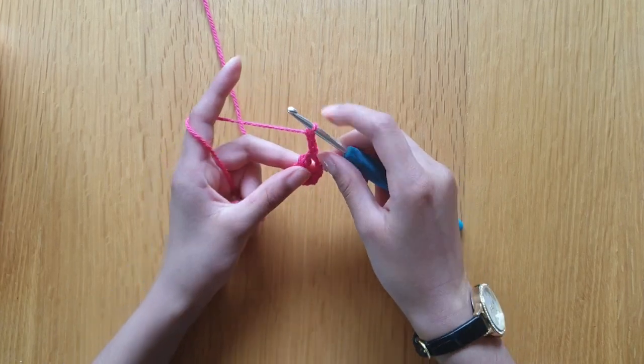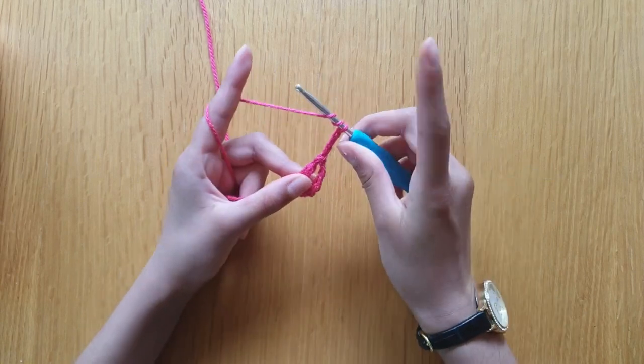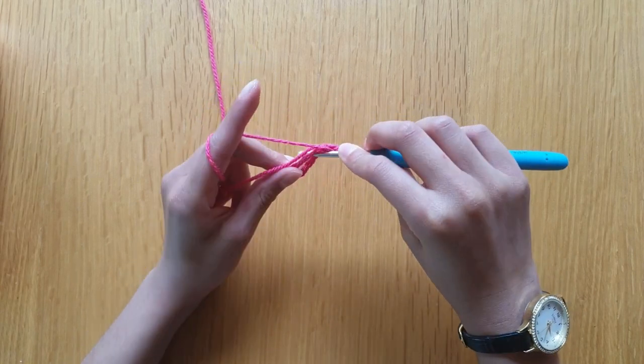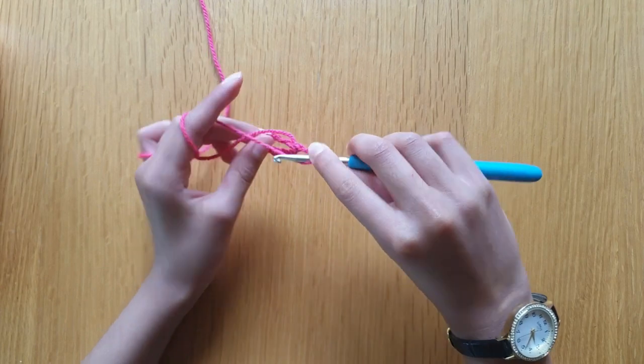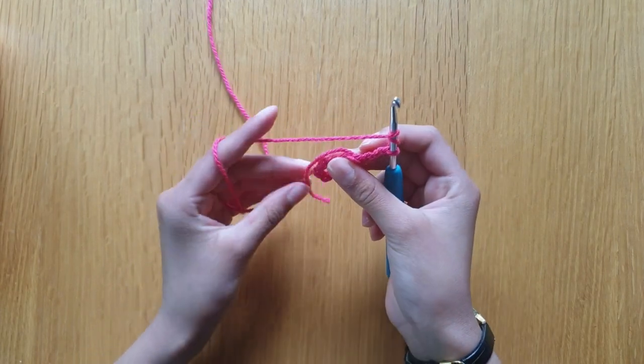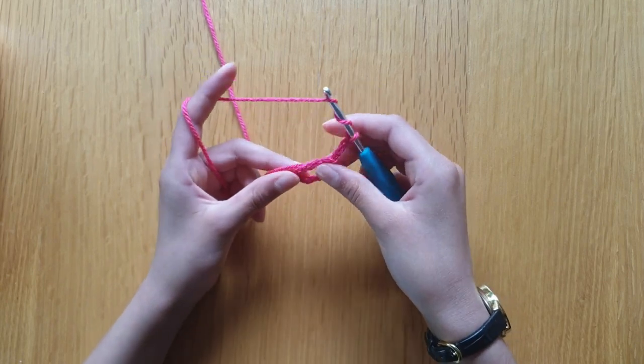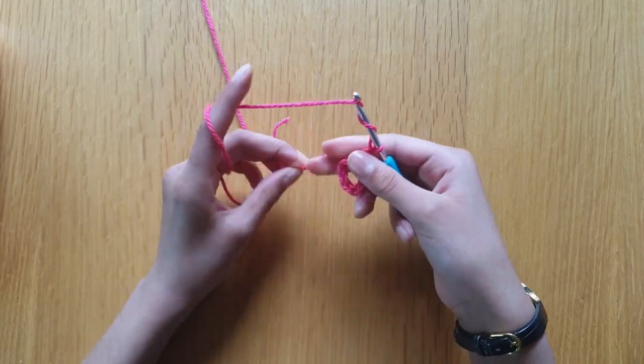We're going to start by doing the double trebles. So yarn over once, yarn over twice, insert into the loop. Make sure that your tail end is sticking with the loop because at the end, if you have a massive loop, you can just tug on it and it'll create a little smaller.